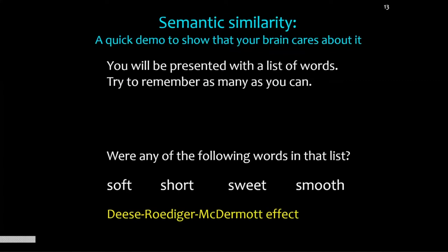Why would you think sweet was in that list? Because it's basically semantically similar to all those other words. Your brain captures some kind of overall measure of semantic similarity, saying these meanings are just kind of like that meaning. The brains of many normal functioning human beings actually store that and care about it. That was meant to be a demo that semantic similarity is something your brain cares about.